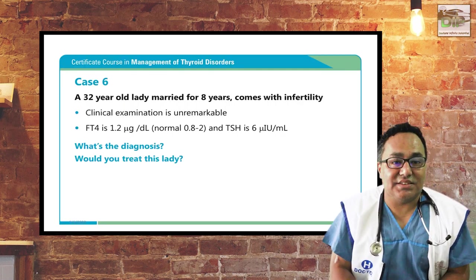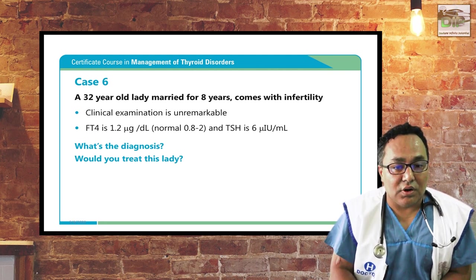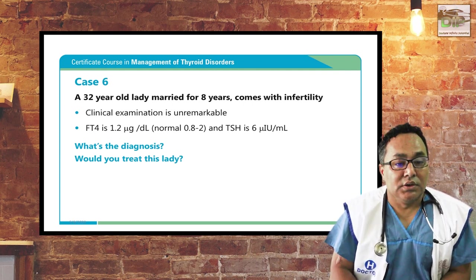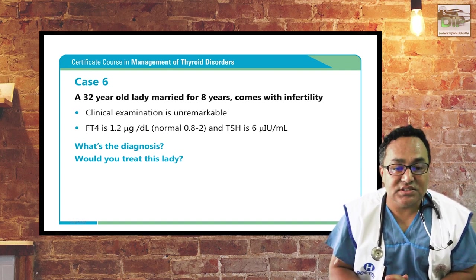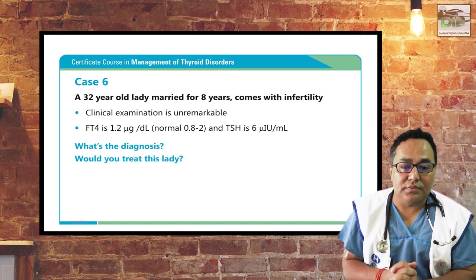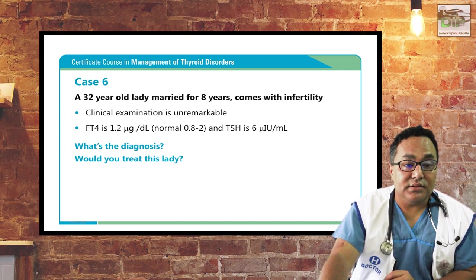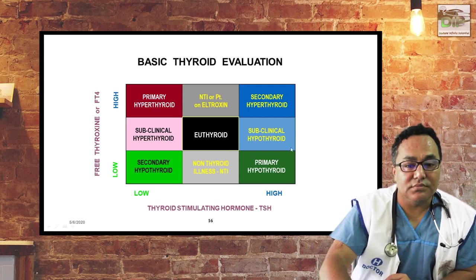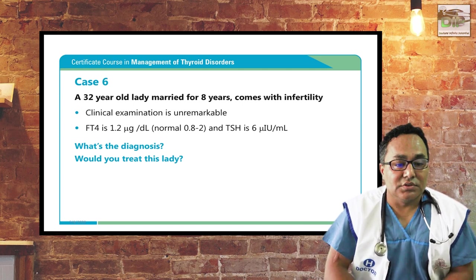Let's discuss a case: a 32-year-old married woman comes with infertility for eight years, referred by the gynecology department. Clinically she is unremarkable. Her FT4 is 1.2 with TSH of 6 — slightly high, since our lab's normal TSH is up to 5 mIU/L. Using the nine square table, TSH is high and FT4 is normal, which means subclinical hypothyroidism.